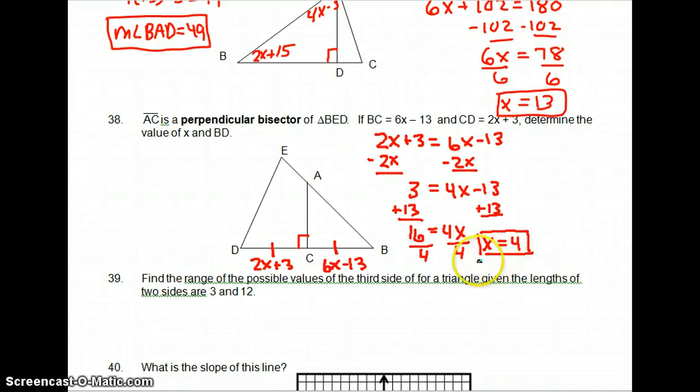Now we need to find BD. BD is the whole thing here. So we need to plug it in here and here. So 6X minus 13 plus 2X plus 3 equals BD. Plugging in our 4.